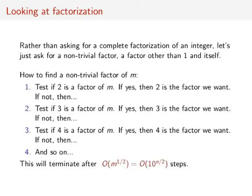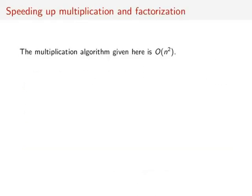Actually, we can do much better than that. It turns out if there's a non-trivial factor, it must be smaller than m to the one-half, so we can actually do this whole procedure in big O of m to the one-half, which is still big O of 10 to the n over 2 — which is exponential in n. So on the one hand, the multiplication algorithm runs in big O of n², whereas the factorization method we've seen runs in big O of 10 to the n over 2.